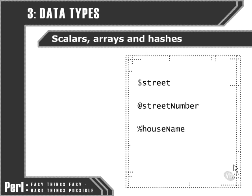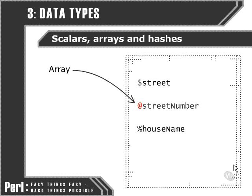Here are three Perl variables. The first one is a scalar — the street — and it simply contains a string, which is the name of the street. However, in order to further identify our house, which is what all of these variables relate to, we could identify it by looking at the street number. The street number is an array because there's more than one number within the street, and each of the elements in the array are sequentially ordered: one, two, three, four, five, and so on.